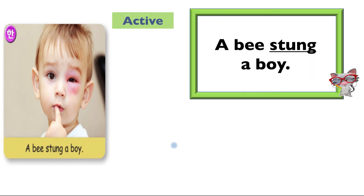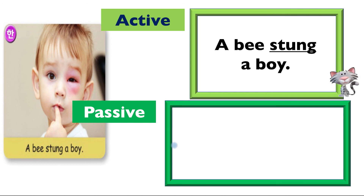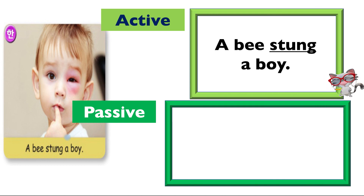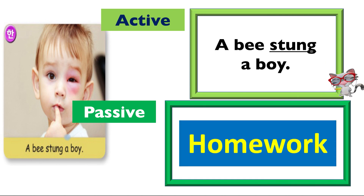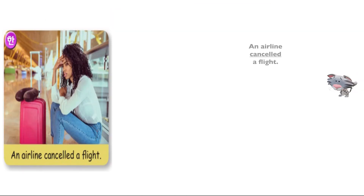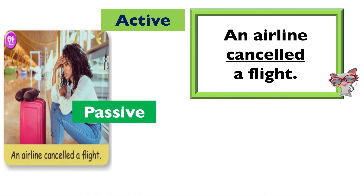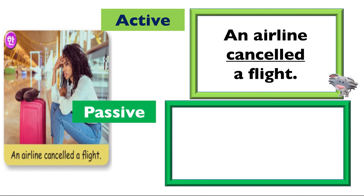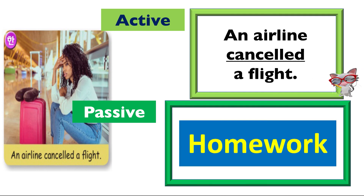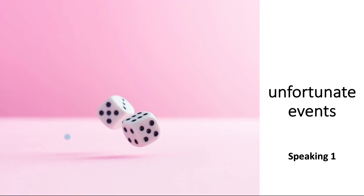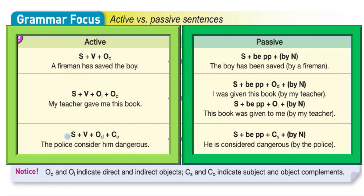'A bee stung a boy.' Stung is the past form of the verb sting - sting, stung, stung. So what passive sentence would you do? 'A boy was stung by a bee.' That one's homework. And the last one: 'A flight was cancelled by an airline.' There you go, folks. That was the unfortunate events - unfortunate because there was a lot of homework in there and a lot of grammar. Hopefully it will help you to become better English speakers and better English writers. That's our target.